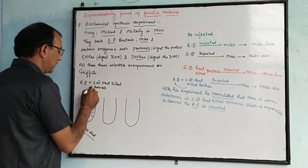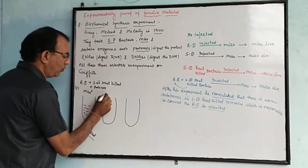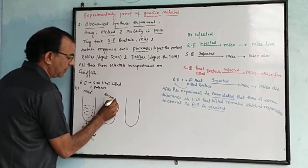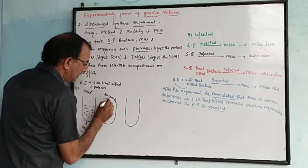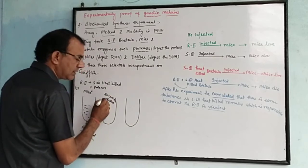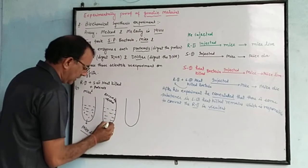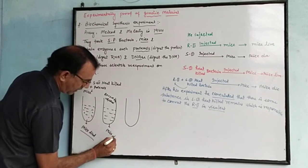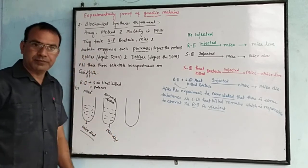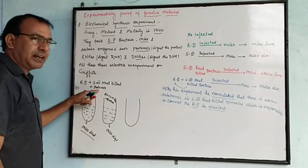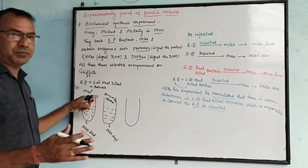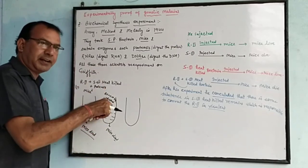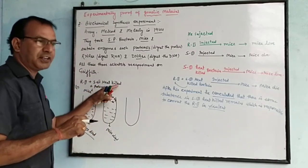Then again, with the same R2 plus S3 heat-killed bacteria, they added RNAse enzyme and injected into the mice. In this condition the mice again died. When proteases was added, it removed protein, leaving RNA and DNA. When RNAse was added, it removed RNA, leaving protein and DNA.